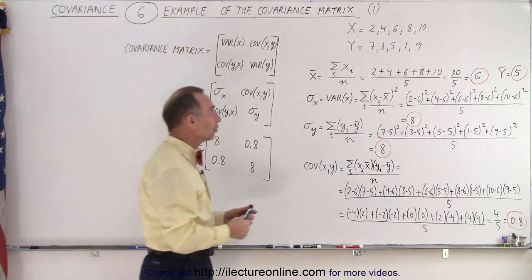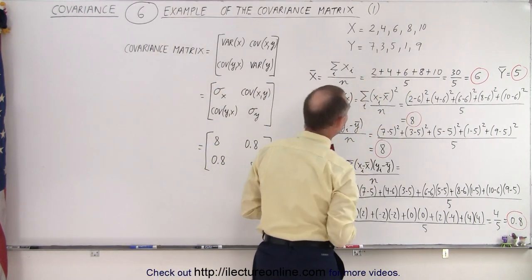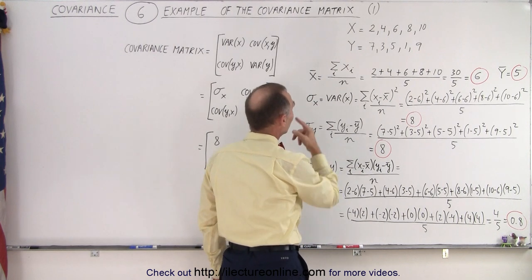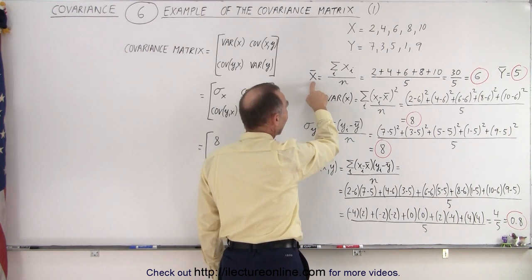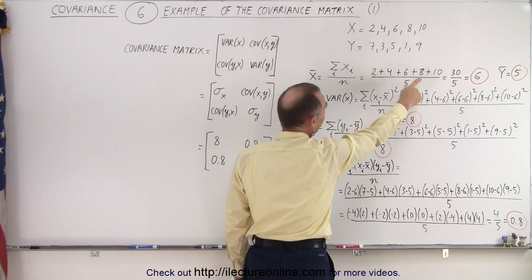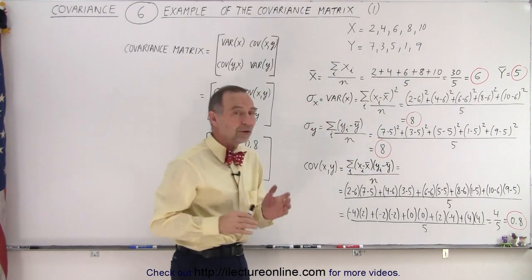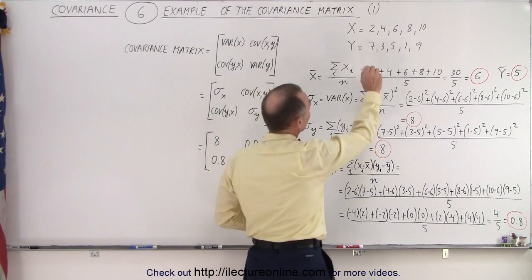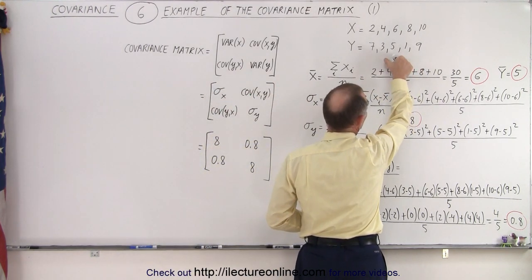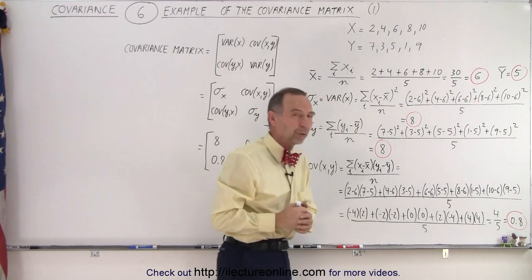So first of all, here are the two data sets X and Y. They each have five elements in the data set. We have to find the average of all the X values, so simply add them all up, divided by the number of values that we have, and the average is 6. We do the same for Y. We add them all up, we get 10, 20, 25 divided by 5, that gives us an average of 5.